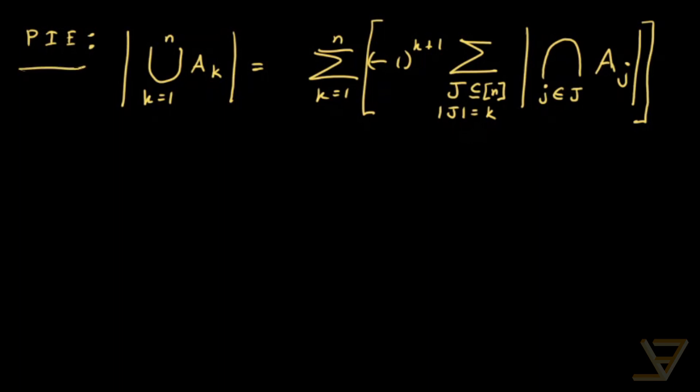And the second thing that I want to say is that the number of bijections h from the section m to the section m is simply m factorial, and we're going to be using this.